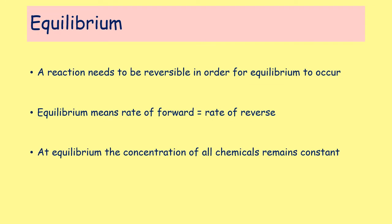In order for an equilibrium to be set up, a reaction needs to be reversible — and that means reversible at the conditions at which you're starting the reaction. When we have an equilibrium set up, the rate of the forward reaction and the rate of the reverse reaction are identical to one another.